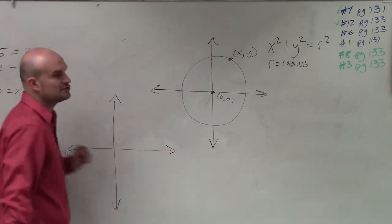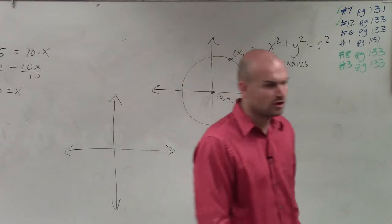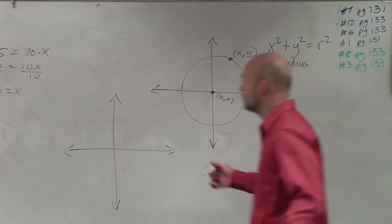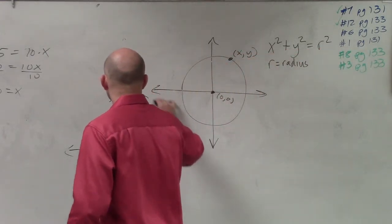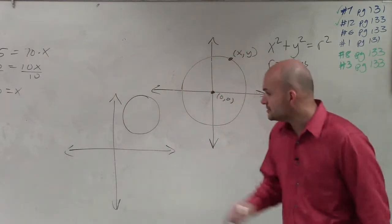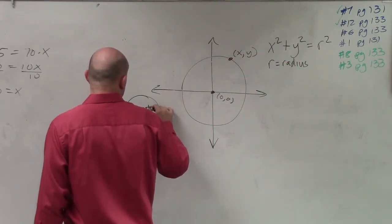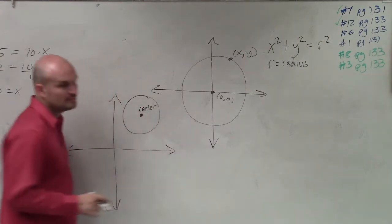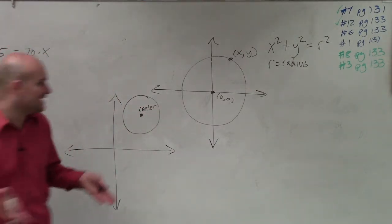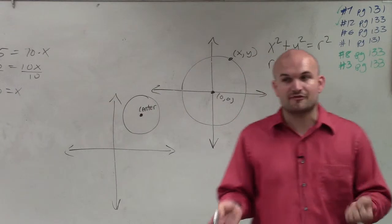Now, what about if I have a circle that is not at the origin, meaning the center is not at the origin? Let's say I have a circle written over here. So you guys can see now the center is not at the origin. So when the center is not at the origin, we're actually going to use a different formula.